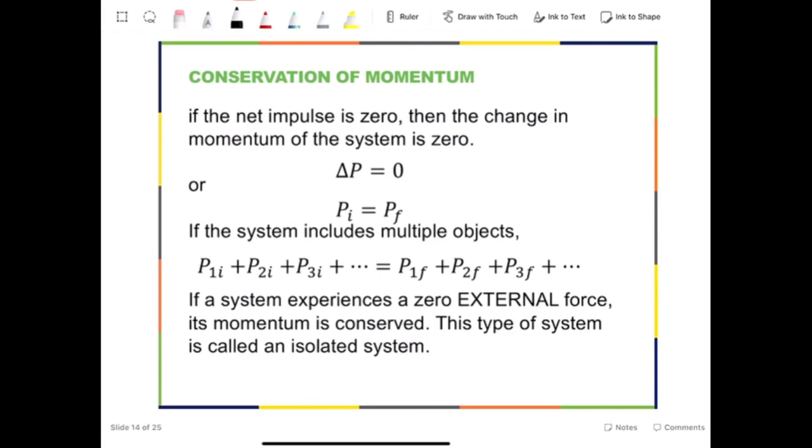The cause of a zero impulse is usually due to the zero net force - all forces canceled or no force at all. If a system experiences no external force, it is called an isolated system.